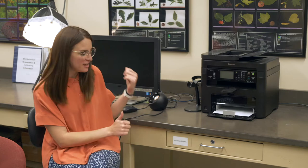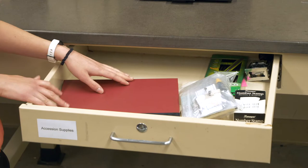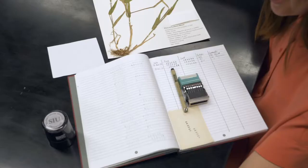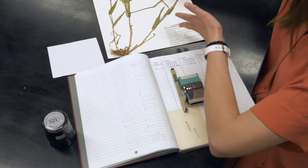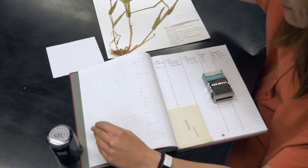Before we begin, we need our accessioning supplies. We'll go to this drawer near the database computer labeled accession supplies. In this drawer, you'll find everything you need for accessioning. For this task, you'll need your specimen, the accession book, the accession stamp, the accession number stamp, and some sort of writing utensil, preferably a pen.